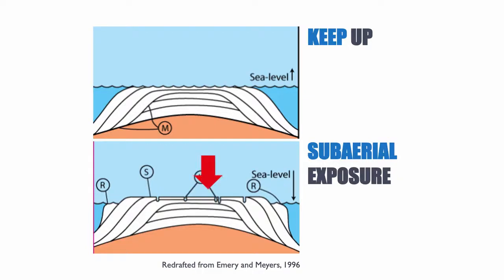When base level falls, that platform is then exposed and we have subaerial exposure. Production of carbonate now shifts to the edge of the platform, and we're back to relatively small factories on the edge of that old platform with smaller volumes of carbonate production. All of this can be understood thanks to ecological rules like the sigmoidal growth curve.